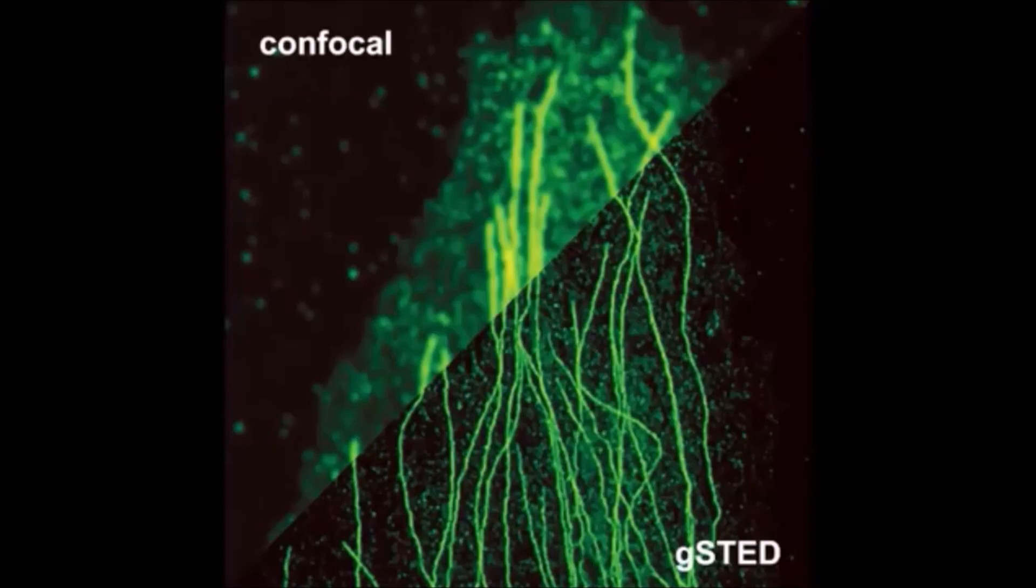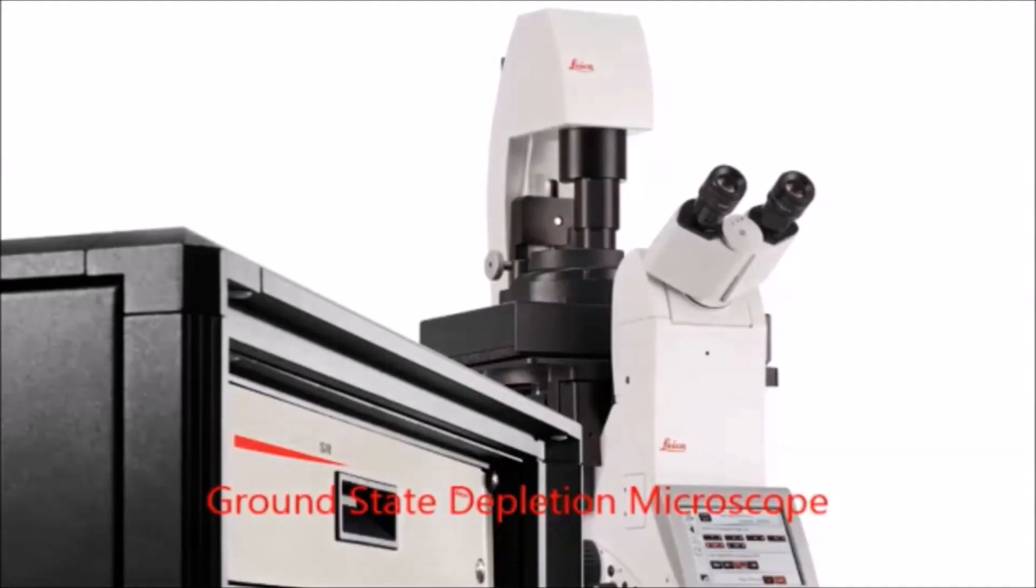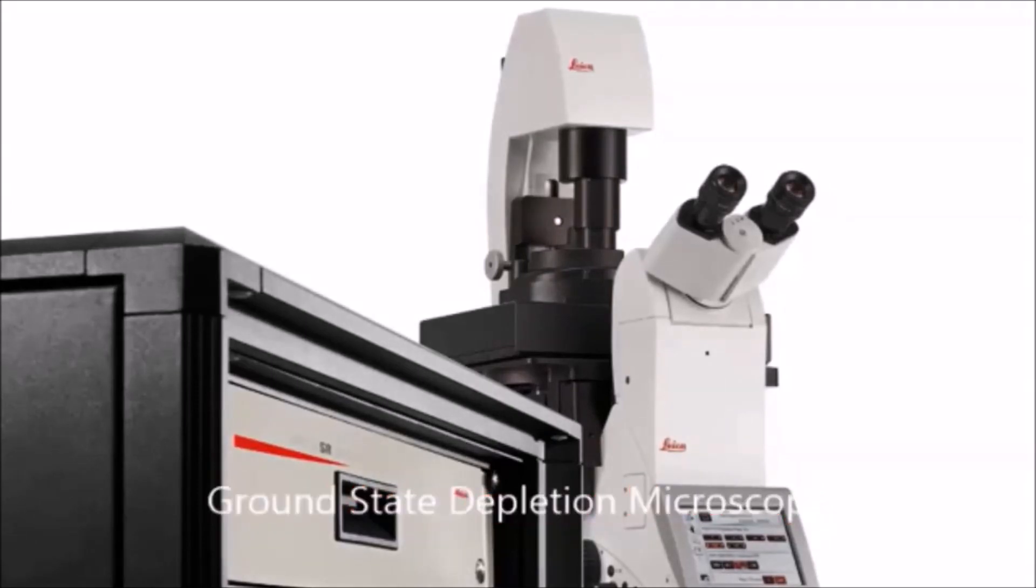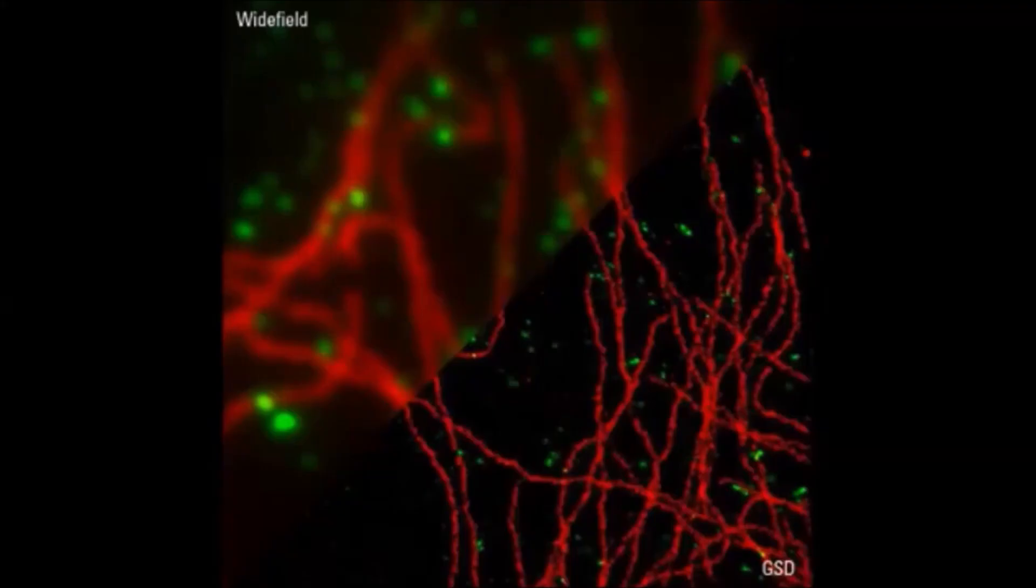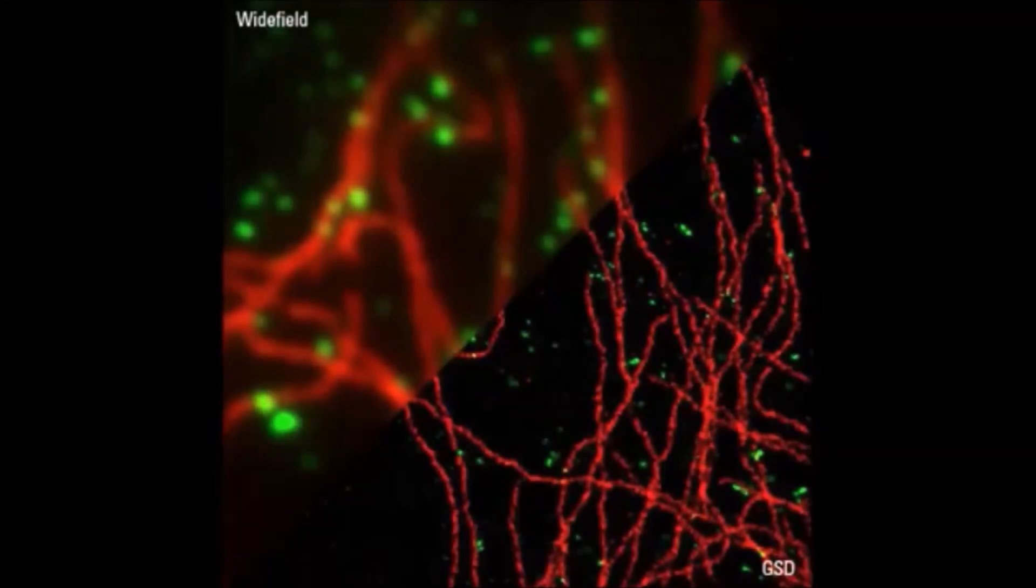The second method Dr. Hell and his team developed is called the Ground State Depletion Microscopy or GSD method. Shown here is a Leica GSD microscope. Also shown is a comparison between a conventional fluorescent microscopy image and the same biospecimen in a GSD image. Again, the resolution difference is obvious, and the effective magnification limit is increased about 8,000x to about 14,000x.